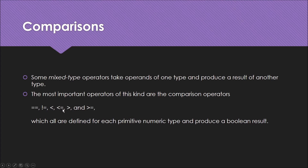For example, suppose A is 5 and B is also 5 and you use the == expression. Since 5 equals 5, the expression A == B returns true. Similarly, if A is 5 and B is 6, they are not equal, so the expression using != (not equal) returns true.